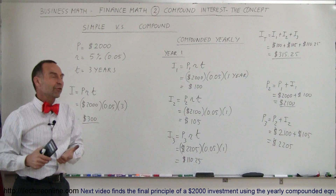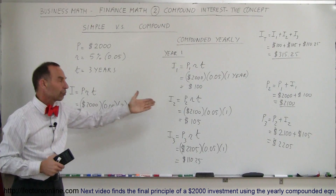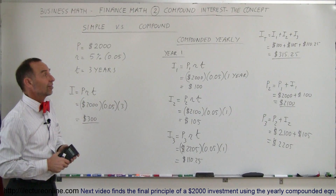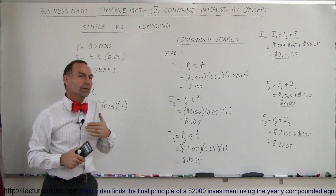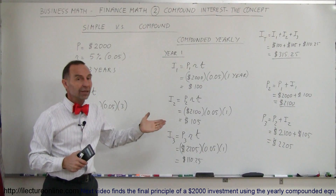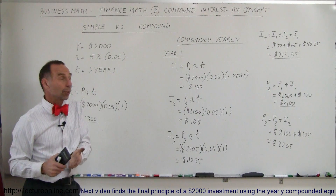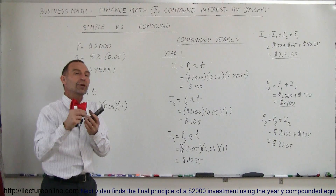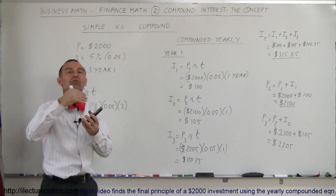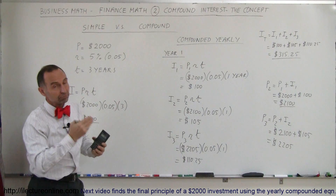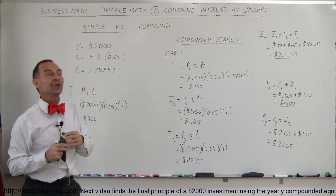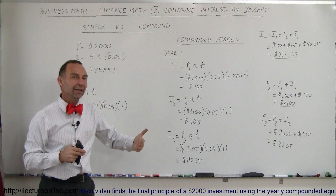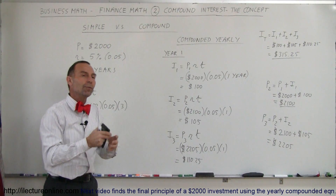There you can see the difference of how compounded interest works versus simple interest. What we can do next is instead of compounding yearly, maybe we'll compound it monthly, then weekly, then daily. The more you compound it, the quicker you'll be earning interest on the interest that you've made. We'll see in our next videos how compounding more often will give you more money.